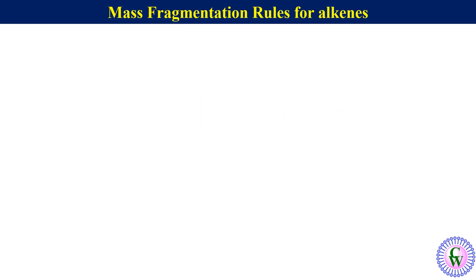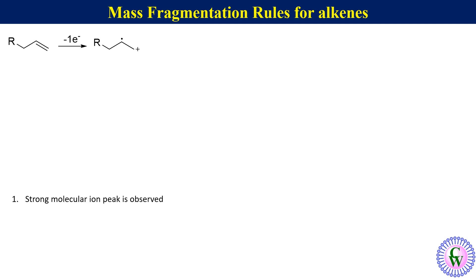Let's go through the basic fragmentation rules for alkenes. Alkenes have a pi bond; during electron bombardment, the pi electron is removed to generate a molecular ion. This doesn't result in fragmentation, and because of this, a strong molecular ion peak is observed. So the first rule is that a strong molecular ion peak is observed.